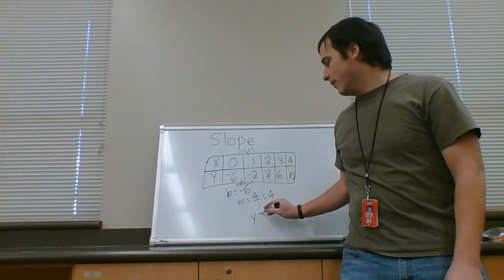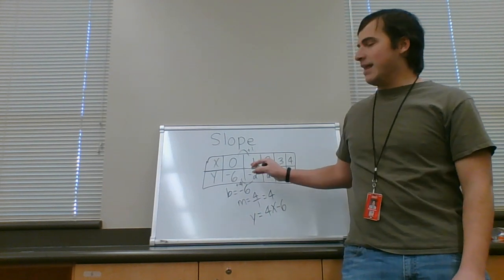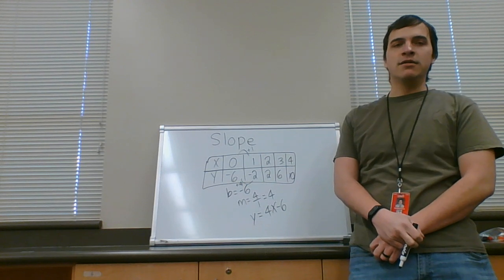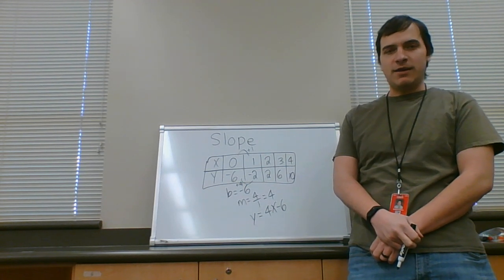Your answer becomes y equals four x minus six. You could have picked any two numbers to find the slope from in there. It doesn't matter. You might have to simplify at the end, but that's okay. You're math petitions. We can do it. No problem.